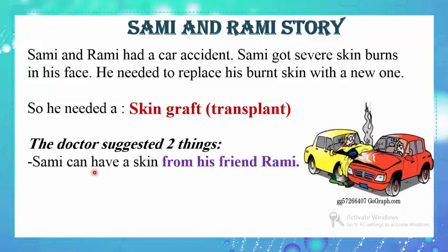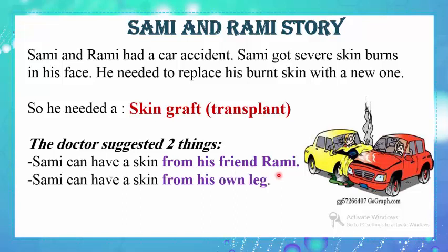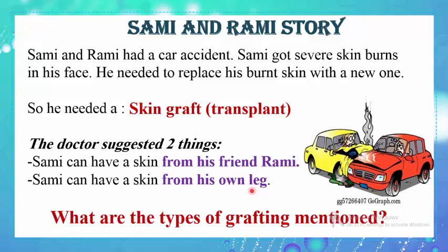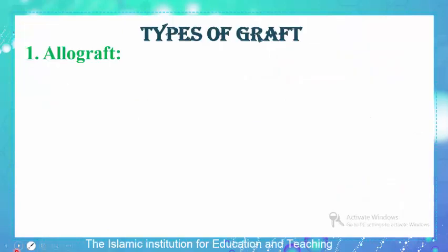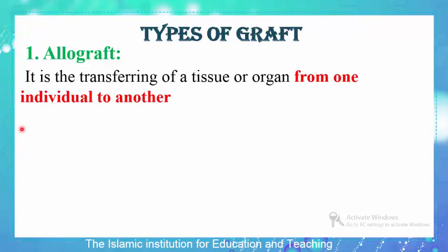The doctor suggested two ways: either Sammy can receive skin from his friend Rami, or he can receive skin from his own leg. What are the different types of grafting mentioned in these two suggestions? That is what we are going to talk about in the next slide.